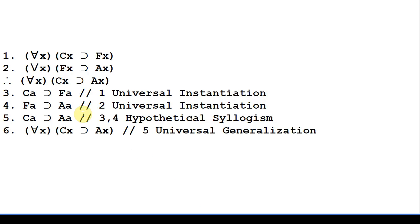What are we going to do here? First, we're going to do universal instantiation on this twice — we learned that rule in the previous video. And we get: if Ca, then Fa. And on line four, we get: if Fa, then Aa. And then on line five, we use a hypothetical syllogism to get: if Ca, then Aa. And that lets us have what we need to do a universal generalization. So we take this constant here and substitute every instance of it with the letter x, which we bind to the universal quantifier. And we get that through the rule of universal generalization.